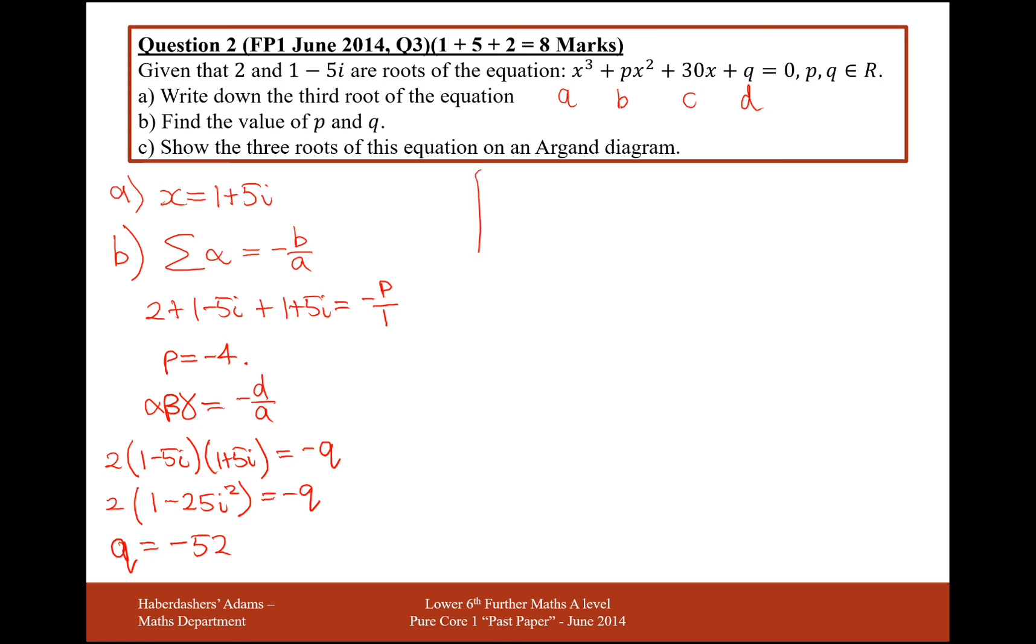Great. Part c is show all of these complex numbers on an Argand diagram. That's nice and straightforward. Big diagram, seeing as I've got a lot of space. The first root is 2, so that's going to be over here. I'll make sure I label it as well. 2.